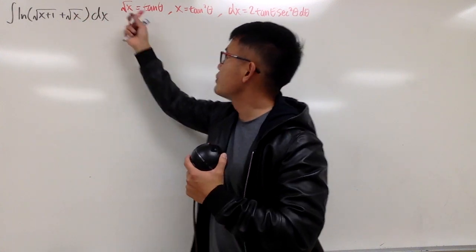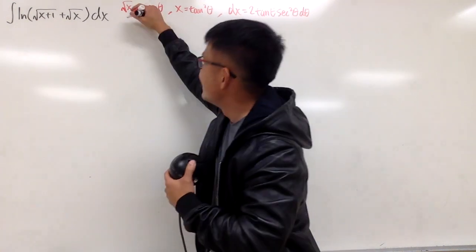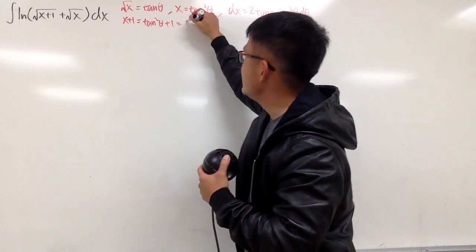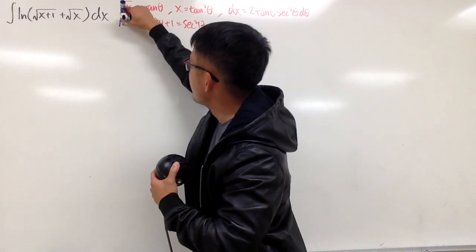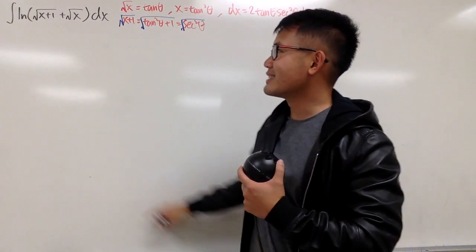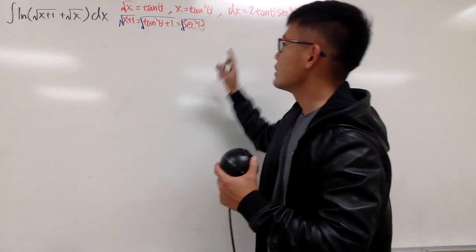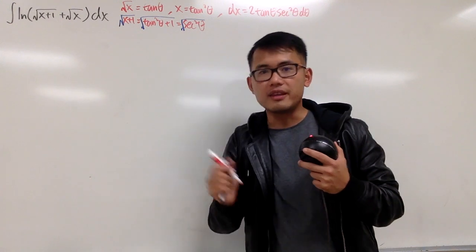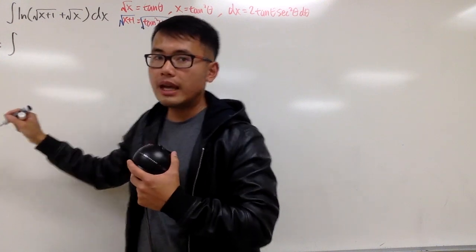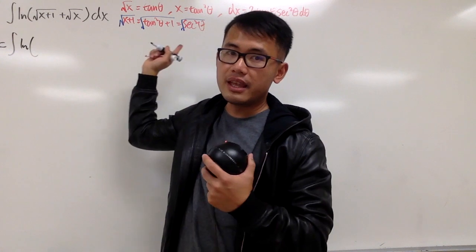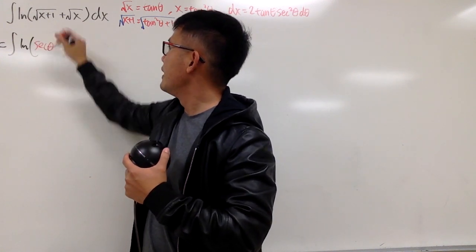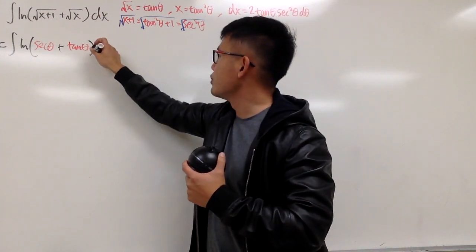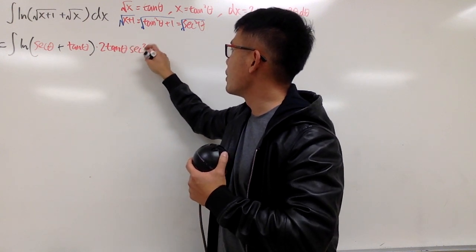Now let's add one on both sides to get x plus 1, which equals tangent squared theta plus 1, and that is exactly secant squared theta. Taking the square root, square root of x plus 1 equals secant theta. Now we put this into the theta world: the integral of ln of secant theta plus tangent theta, times dx which is 2 tangent theta secant squared theta d theta.